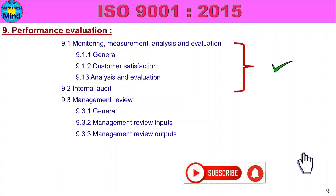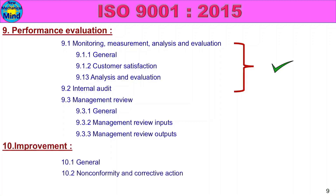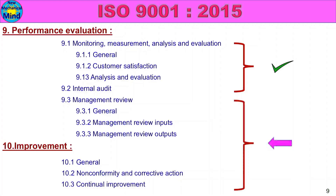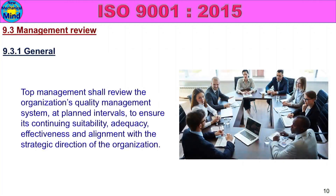That's the 9.3.1 General; 9.3.2 Management Review Inputs; 9.3.3 Management Review Outputs. This content is Class 10, Improvement — 10.1 General; 10.2 Non-Conformity and Corrective Action; 10.3 Continual Improvement. This part is 9.3 Management Review, and alignment with the strategic direction of the organization.